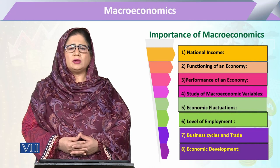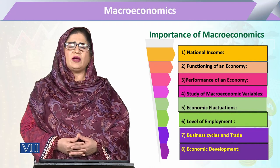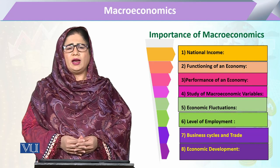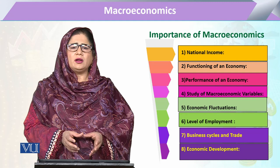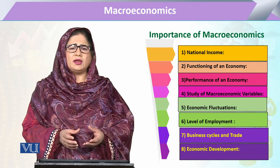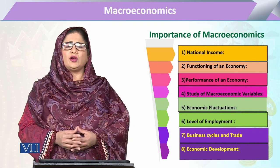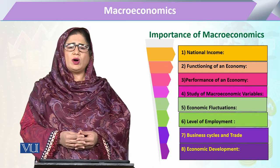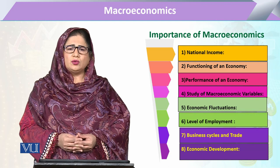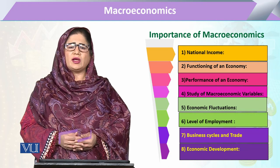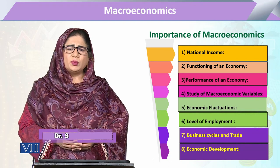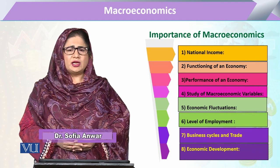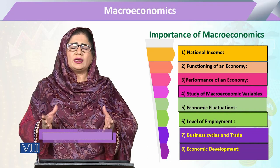Previous studies have described that there are two parts: capital and labor. When we say labor, it refers to the total human population of the country. National income is basically developed on the theory of the accumulation of capital and human capital in the form of labor. When we say national income, we mean the total country's income.